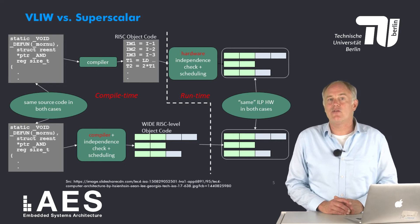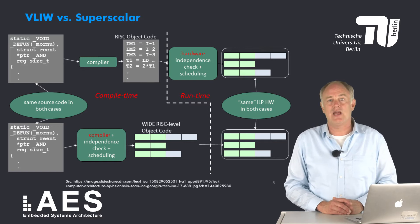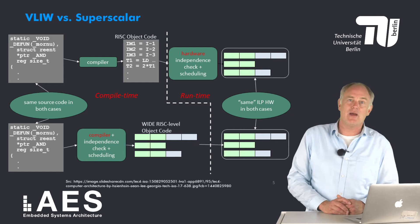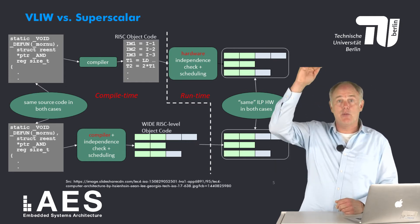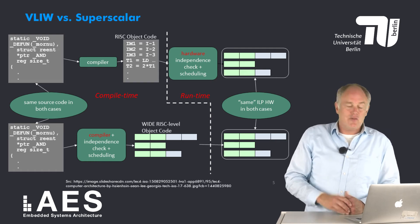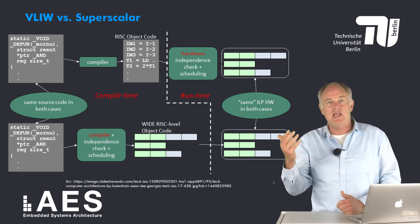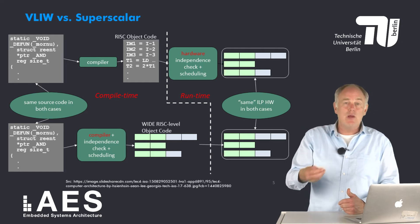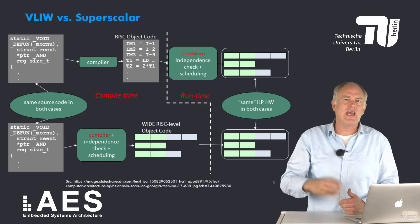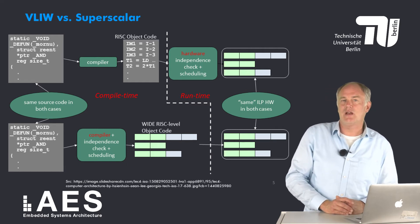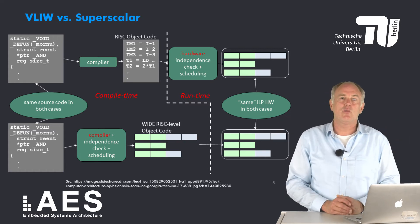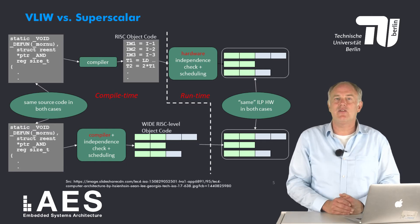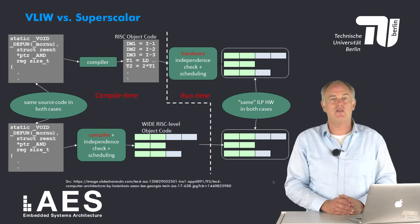This slide shows the subtle difference between the VLIW approach and the superscalar approach. The difference is where you draw the border between what is performed at runtime and what is performed at compile time. In the superscalar approach, the compiler compiles to basic RISC-like object code and then the hardware takes over and performs independence checking plus scheduling. In the VLIW approach, the compiler generates code and also performs independence checking and scheduling, producing wide object code executed on the same parallel functional units. So the hardware logic for independence checking and scheduling is needed for superscalar but not for VLIW.